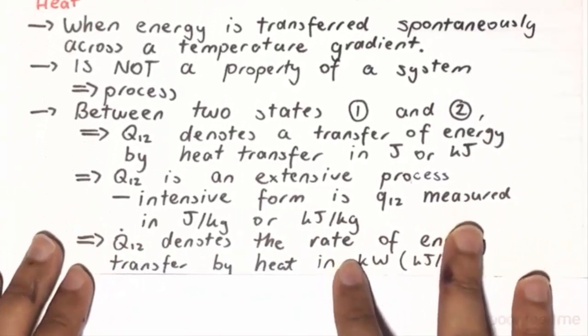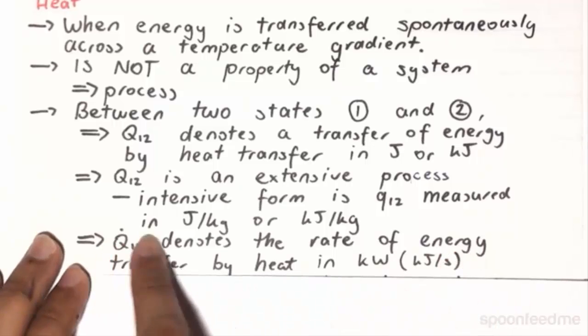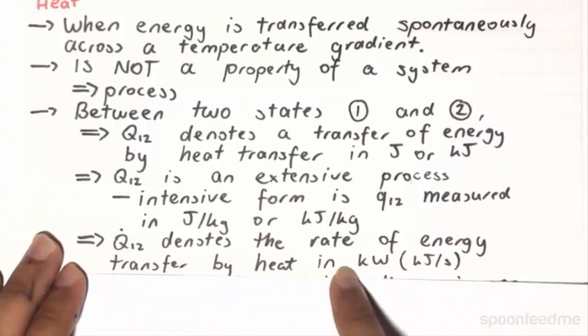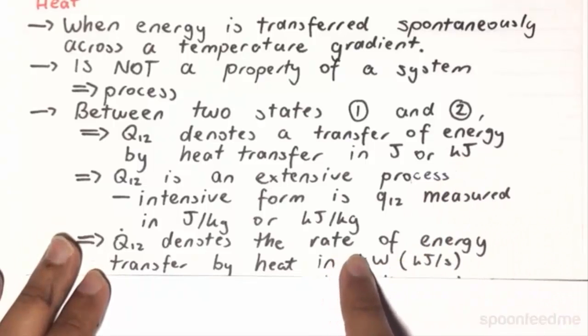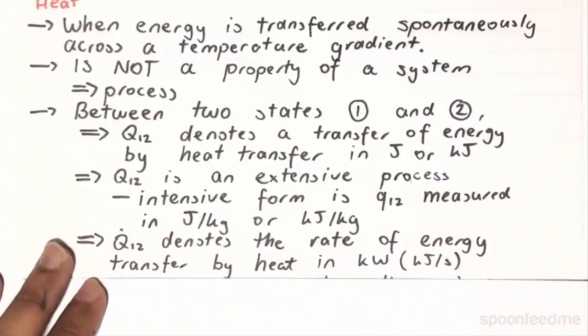Furthermore, Q12 with a dot on top denotes the rate of energy transfer by heat, and so this is going to be in kilojoules per second, which is in kilowatts. Or if you are working in joules, or in the rare case that you're working in joules, it will be in joules per second.